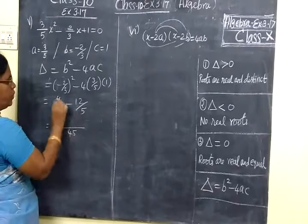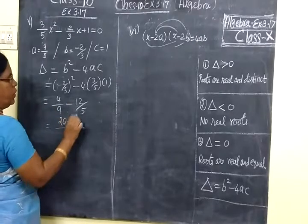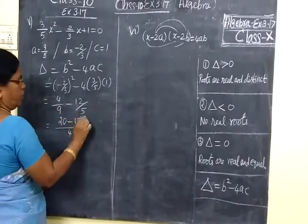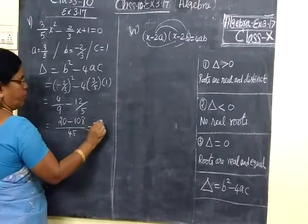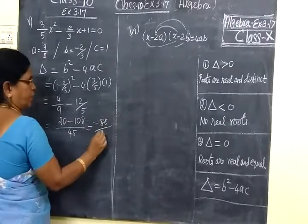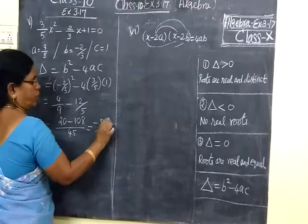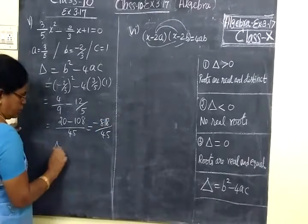So equal to 4/9 minus 4/5. If you take LCM 45, cross multiply: 5 fours are 20 minus... So if you subtract, you will get -88/45.